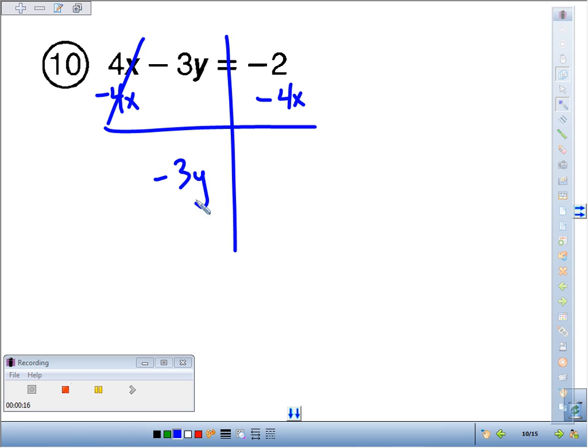We get negative 3y equals 2, negative 2 minus 4x. Can't combine those, can't combine constants with variables.